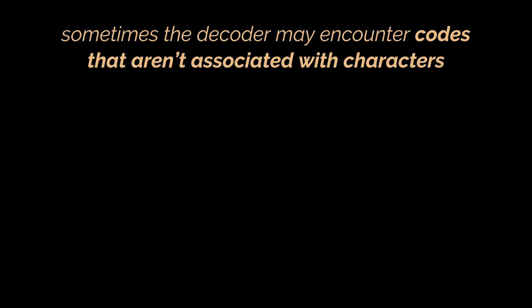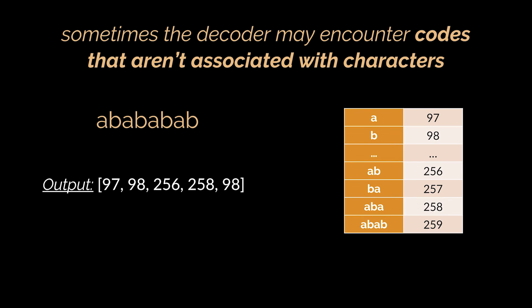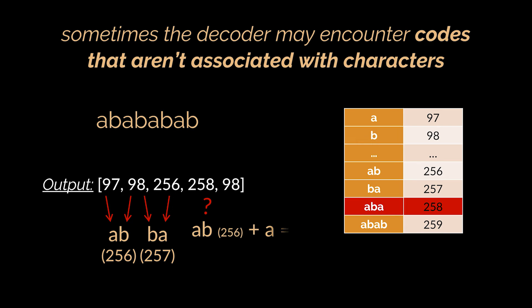However, because of this, sometimes the decoder may encounter codes that aren't associated with characters, meaning no entry has been created for them yet in the dictionary. To know the character associated with this code we might have to guess it. Take an alternating two-letter string as an example. While decoding, we encounter code 258 before having inserted it. To deal with this exception, you simply take the substring you have so far — 'AB' in our case — and concatenate its first character to itself, so 'AB' plus 'A' equals 'ABA', instead of following the normal procedure. This turns out to lead to the expected result.